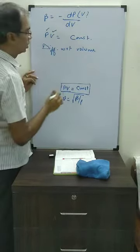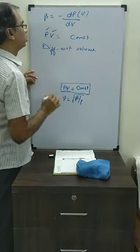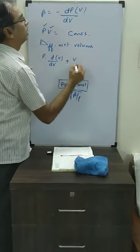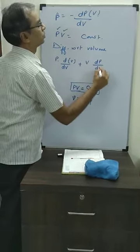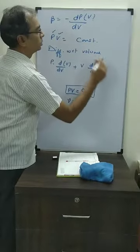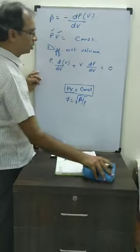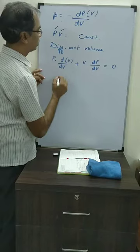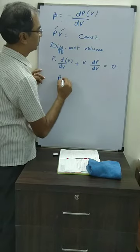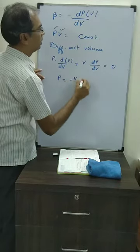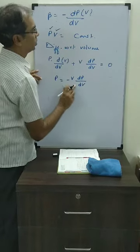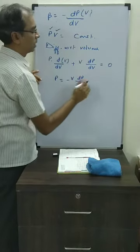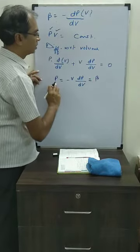Both P and V are changing, so we apply the product rule: P times differentiation of V plus V times differentiation of P equals zero. Differentiation of V with respect to V is 1, giving P plus V times dP by dV equals zero, which means minus V dP by dV equals P. Checking against the definition, this equals beta. So beta value for the isothermal process is equal to pressure P.